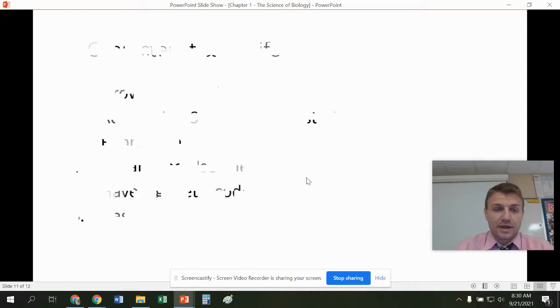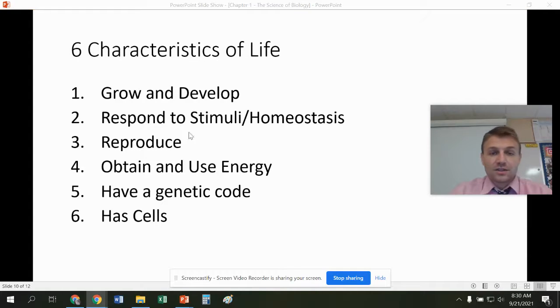The six characteristics of life are all living things must grow and develop. They must respond to stimuli or have a homeostasis, which means what we're going to talk about next here is a way to regulate internal temperatures or conditions like pH, how much water you have in your system. They must be able to reproduce, obtain and use energy, and have a genetic code. Lastly, they also have to have cells. So all of these characteristics must be exhibited by something for it to be living. Other books might have seven or eight. I choose these six because they're easier, and most books have these six characteristics. So just understand these, there might be some variance on other platforms.